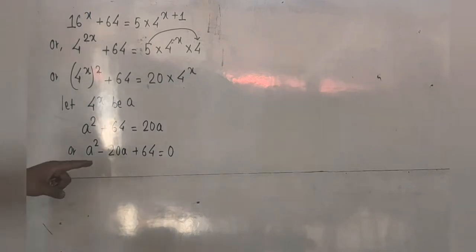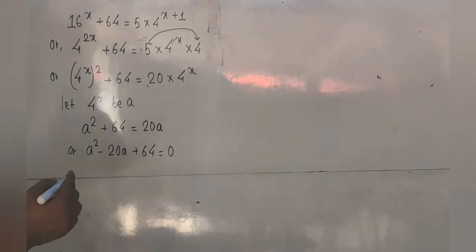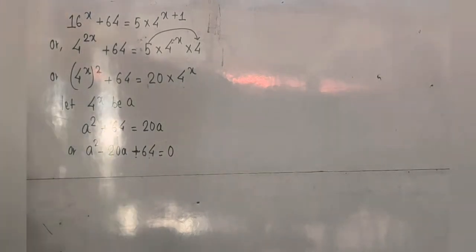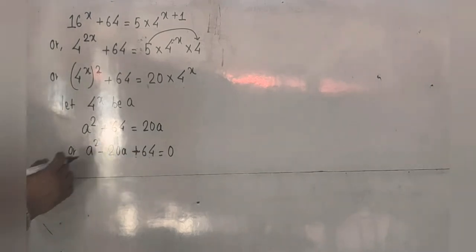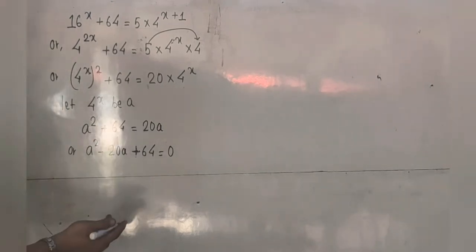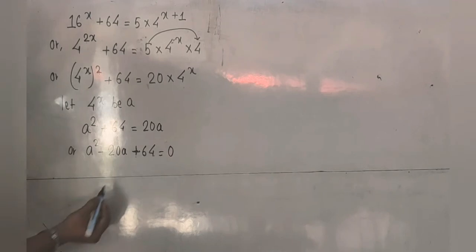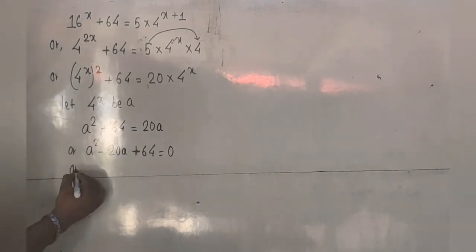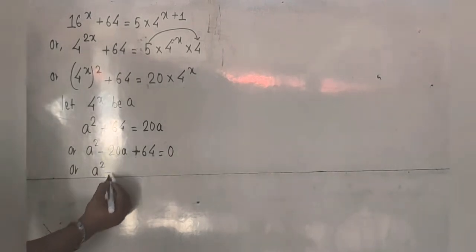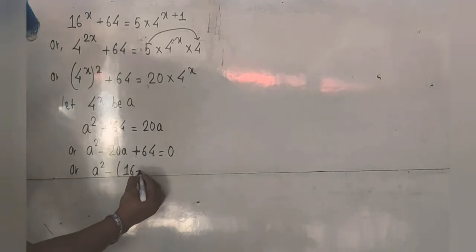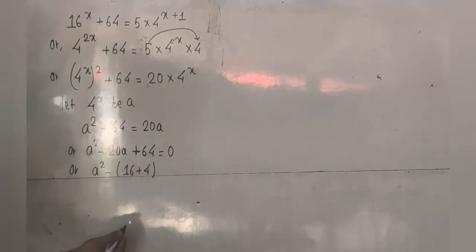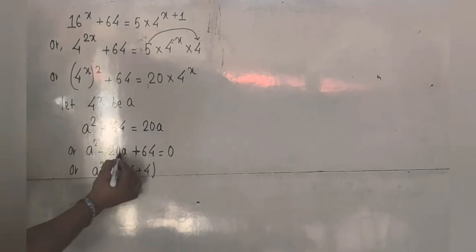Now I have to factorize it. I need two numbers which when multiplied give us 64, and when added give us 20. The numbers are 16 and 4: 16 into 4 is 64, and 16 plus 4 is 20.